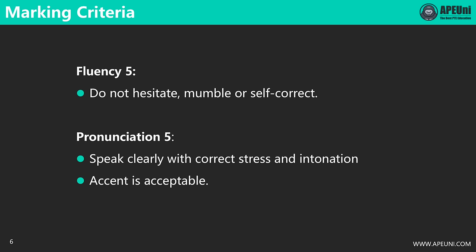For fluency and pronunciation, the full mark is five points each. To get a high score in fluency, you should not hesitate, mumble, or self-correct. A lot of students make this mistake when they're speaking and trying to remember words at the same time. For example, recording halfway through, your memory of the later half becomes vague and you start saying 'mmm, it is...' This will get you heavily penalized in fluency.